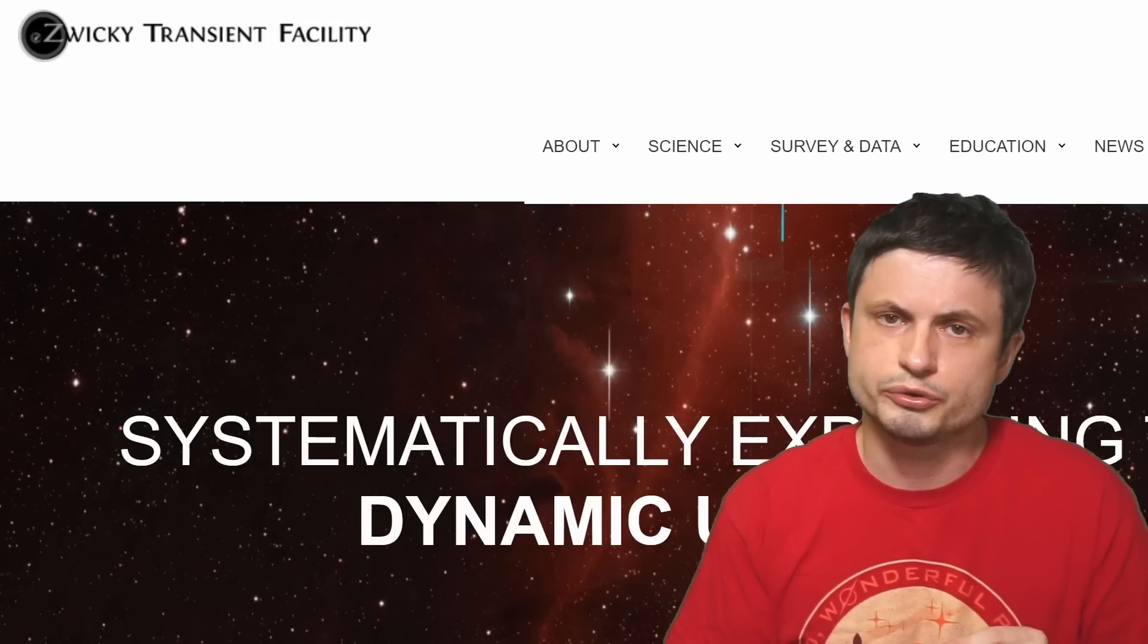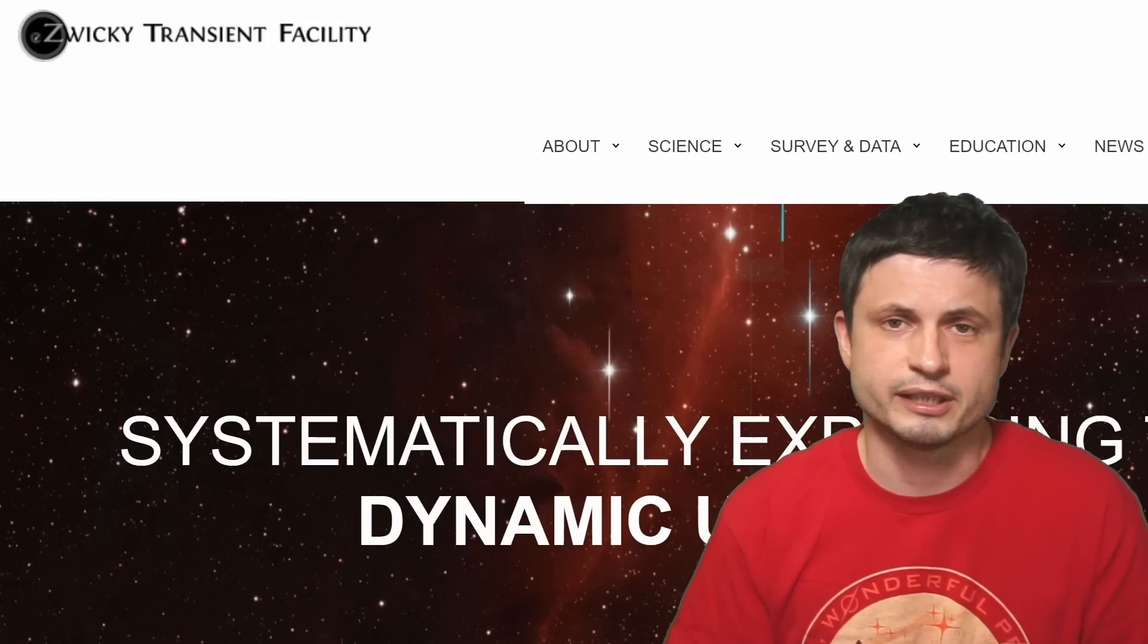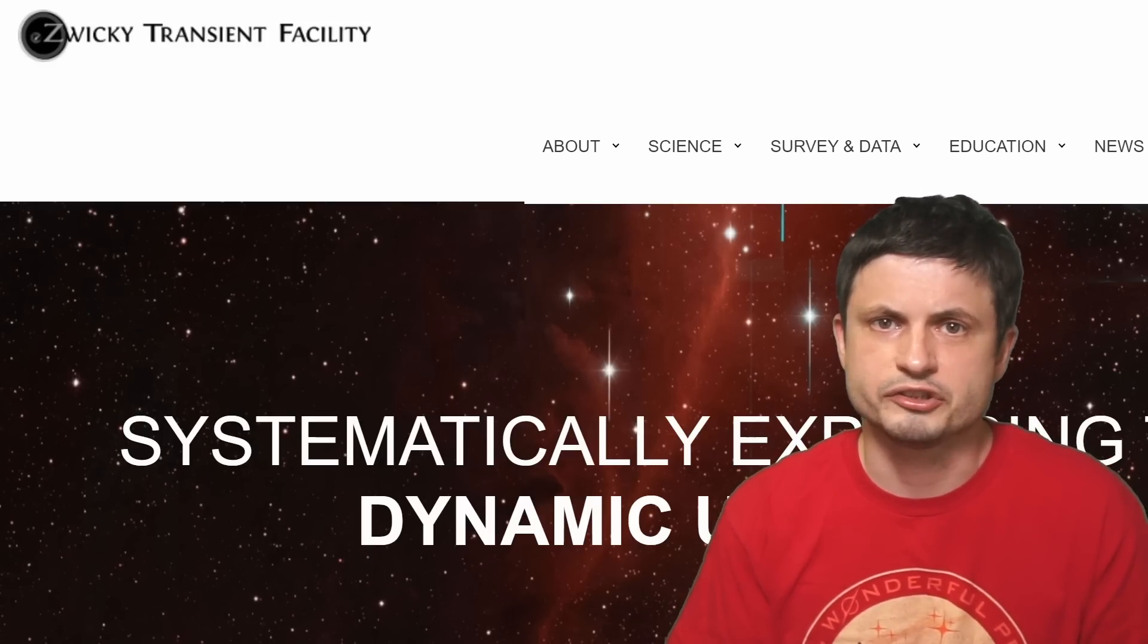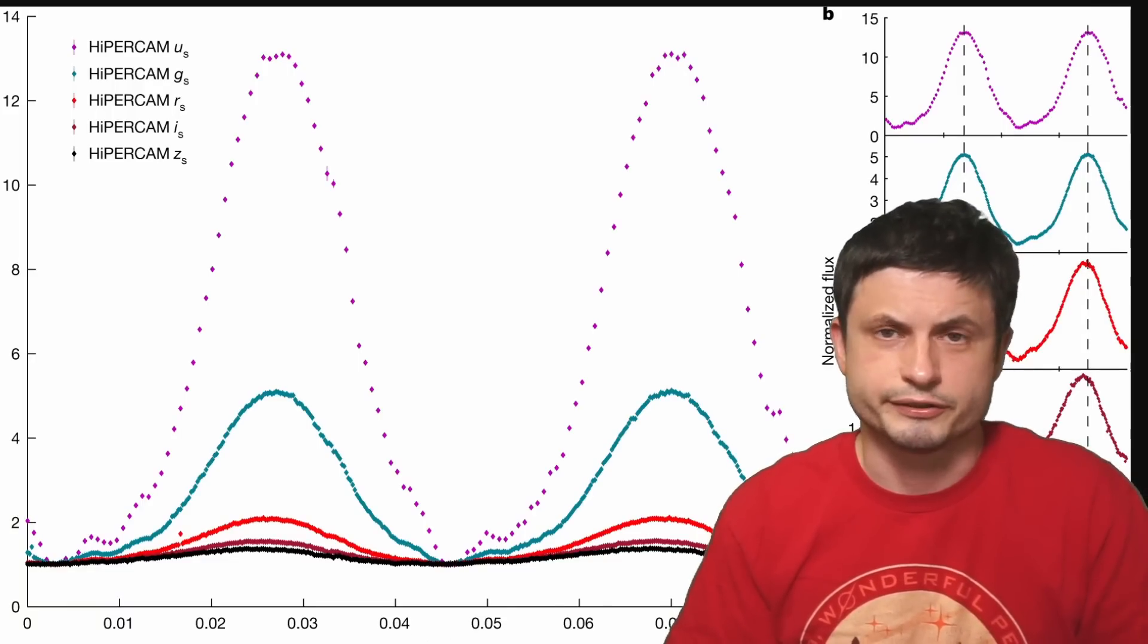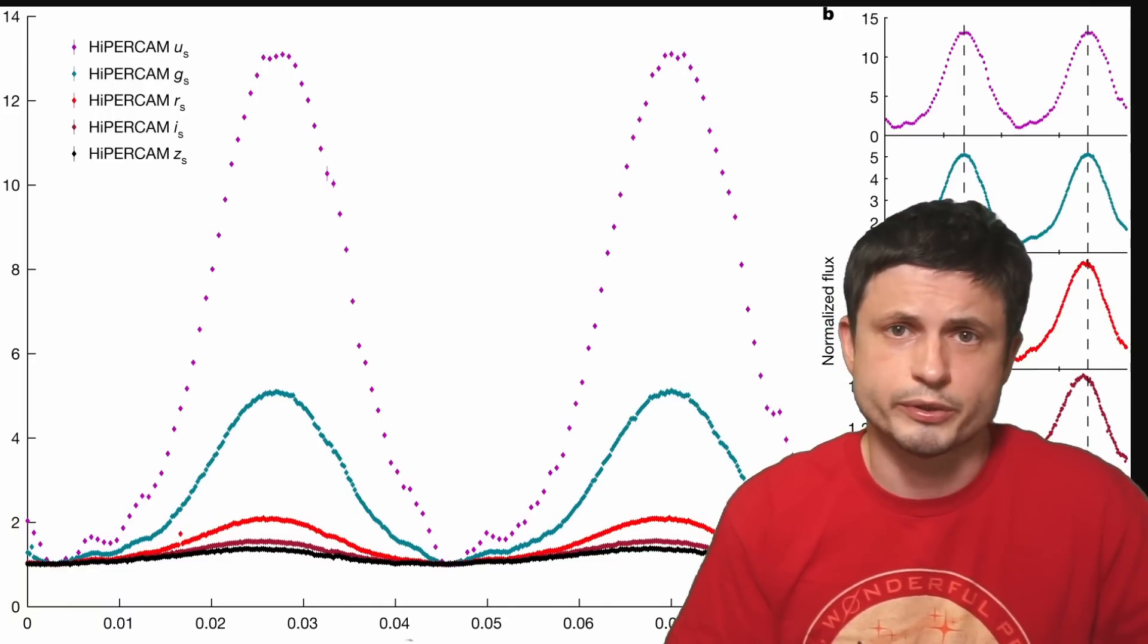And although it's really good at detecting, for example, supernovae, in this case the scientists wanted to see if they can find something that basically blinks, increases and decreases in brightness periodically.